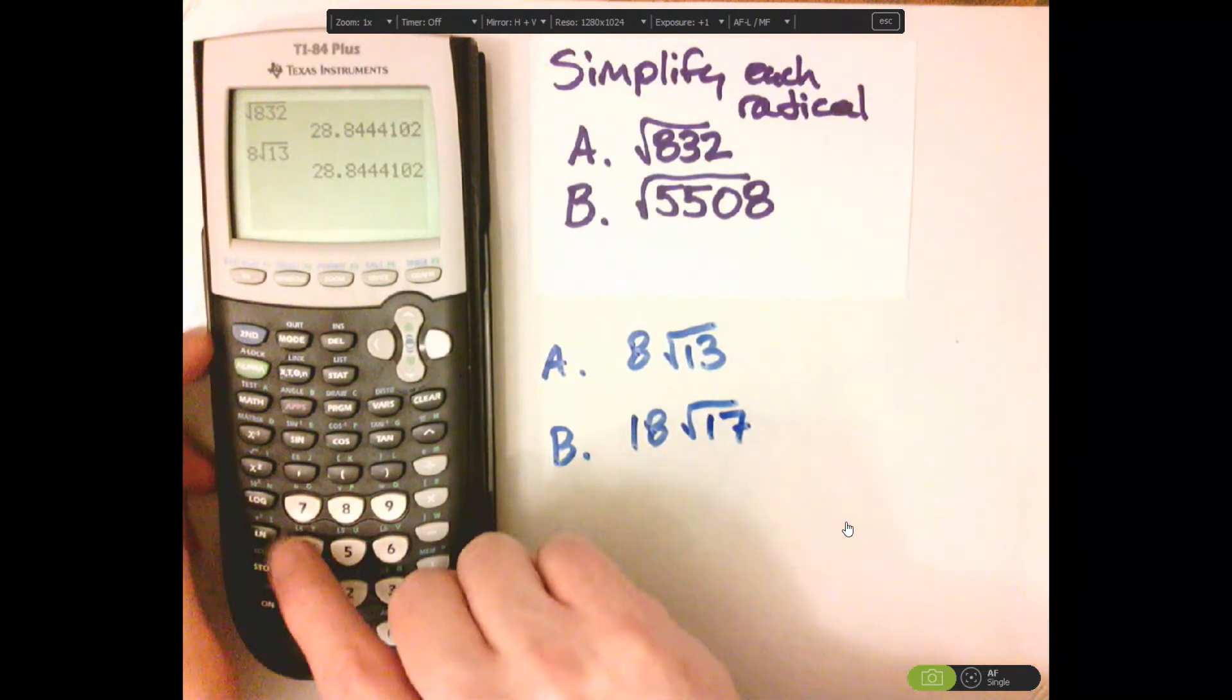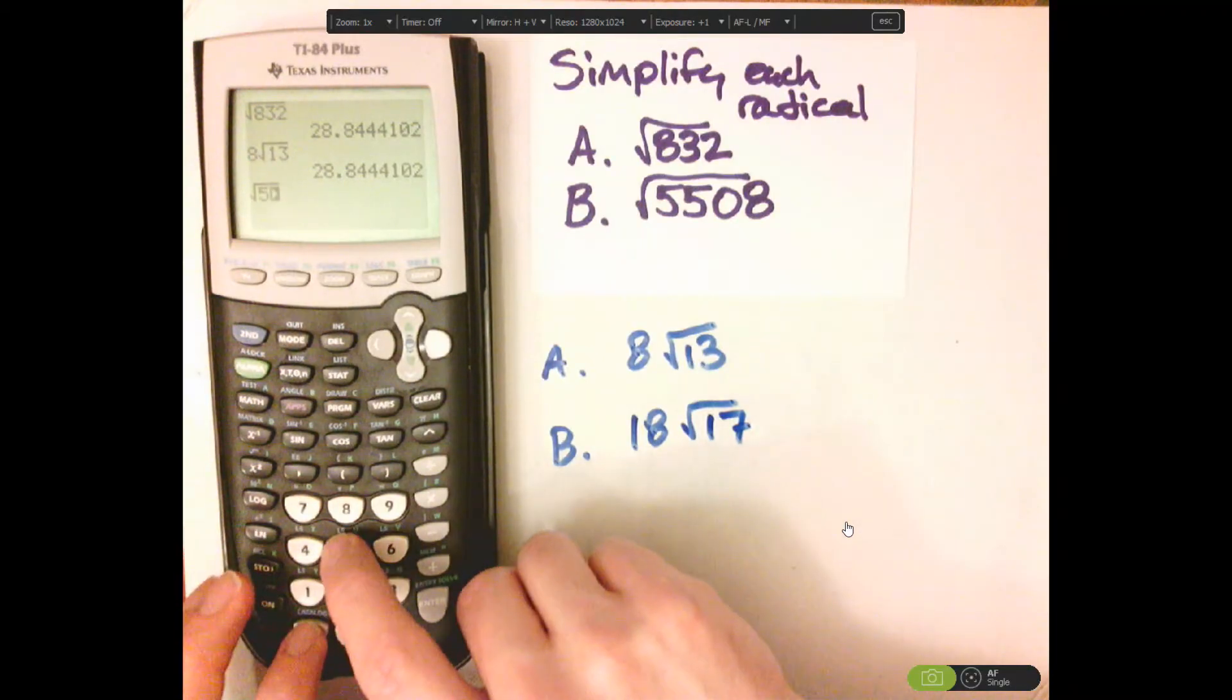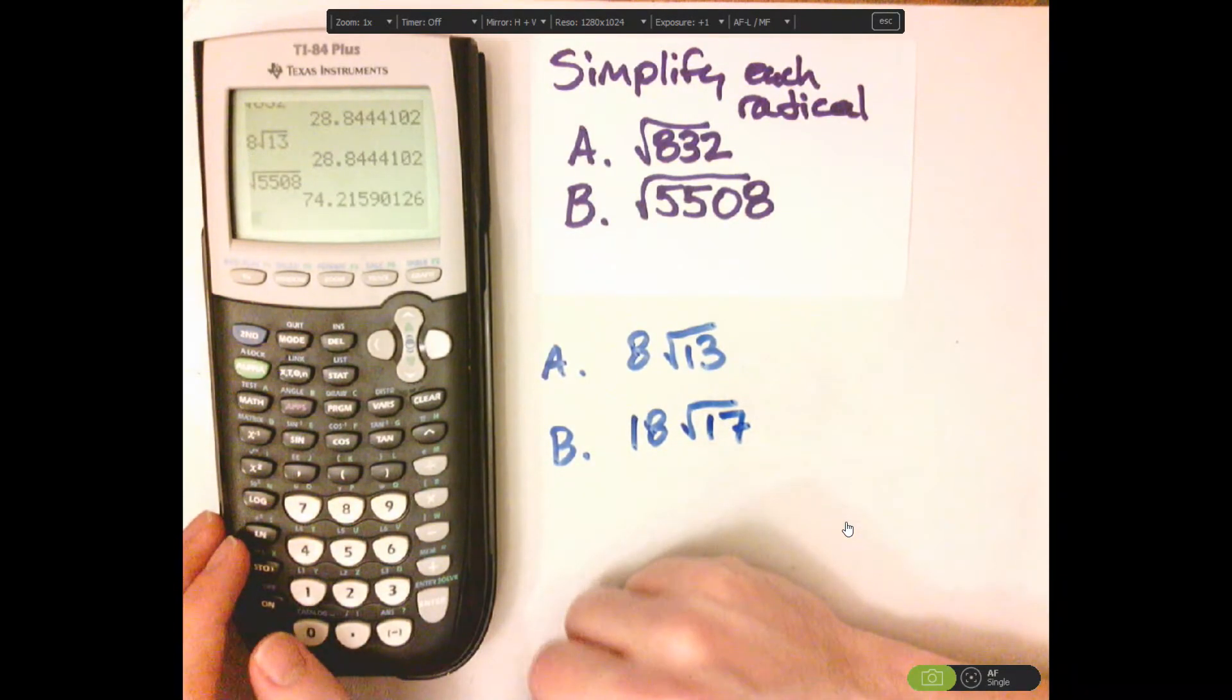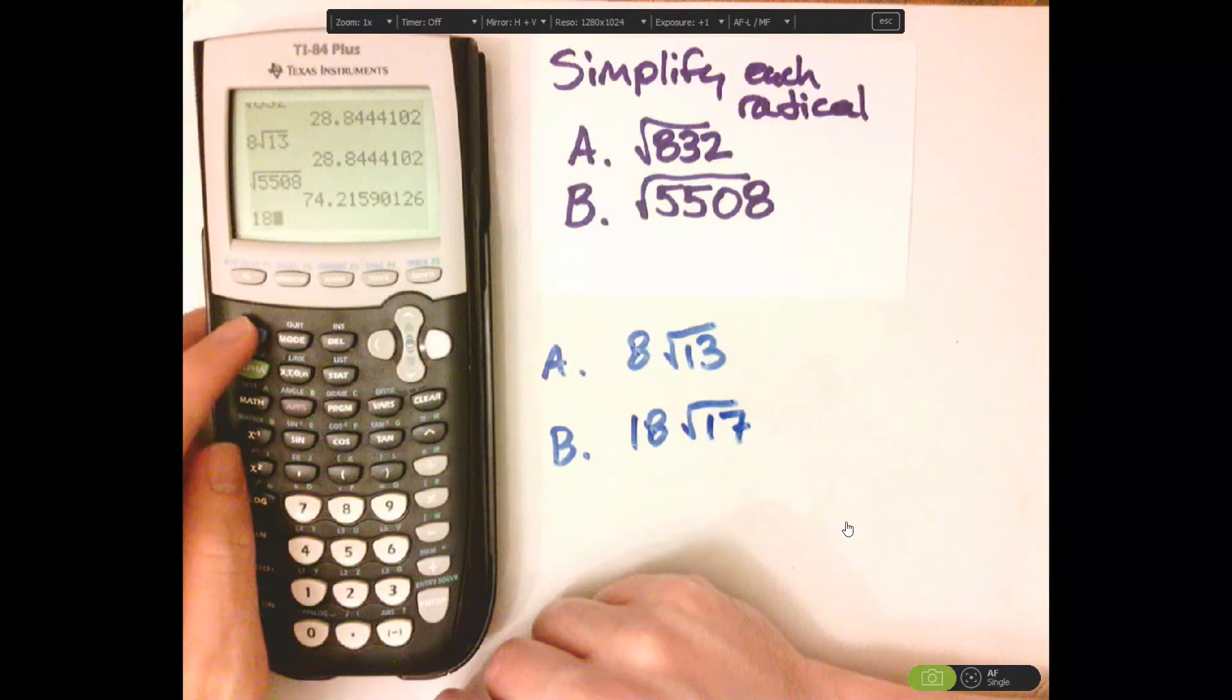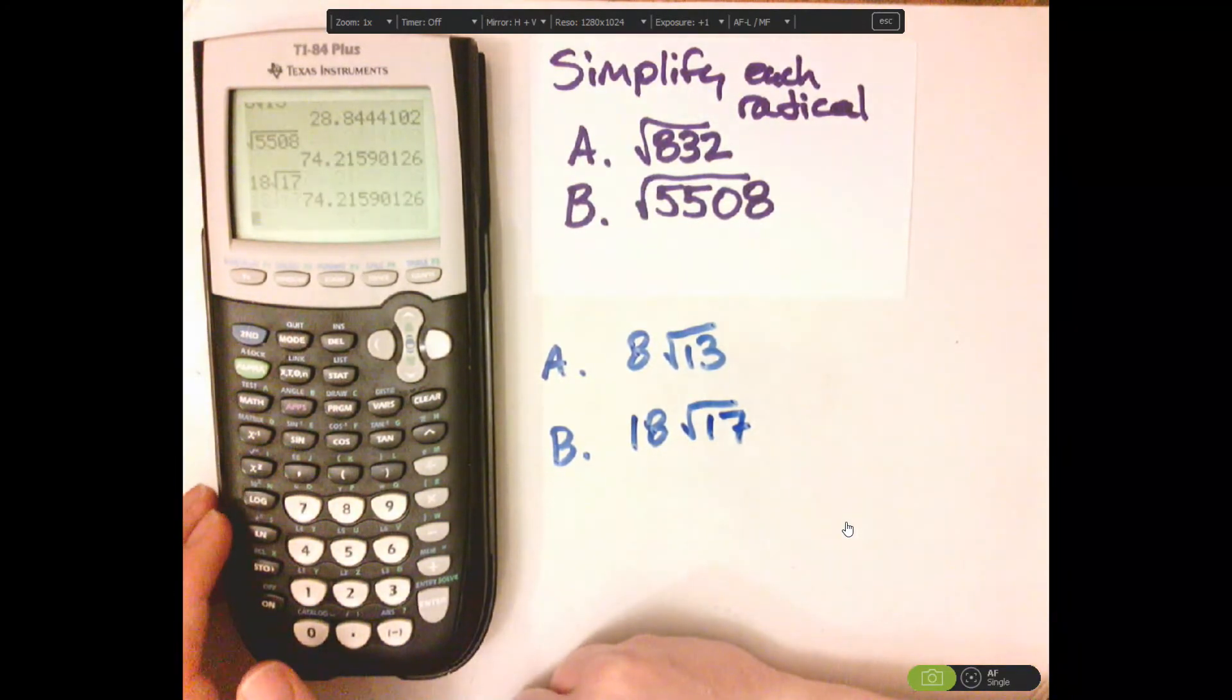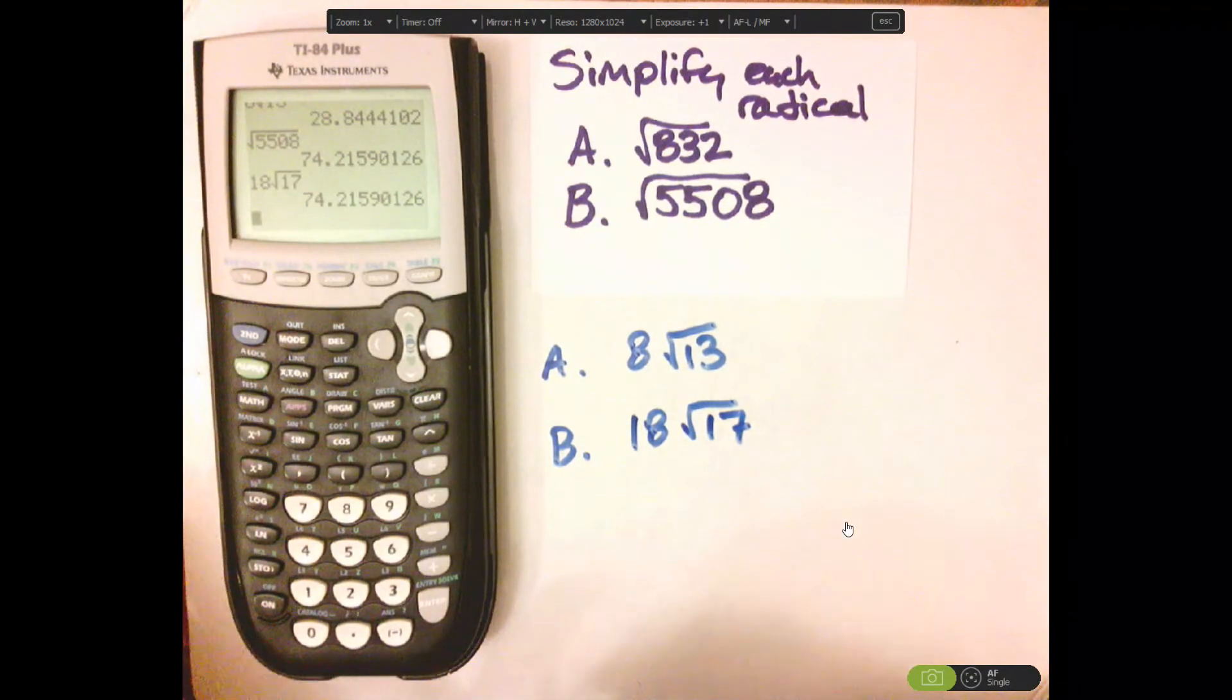Let's do that second one. So second square root is 5,508. It gives me 74.2 something something something. Let's type in 18 square root of 17. Notice that the decimals are the same. So they do check out.